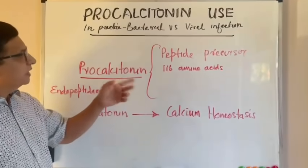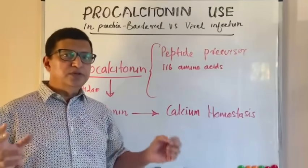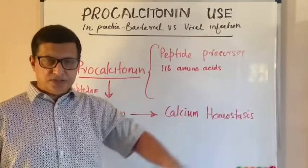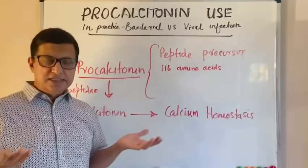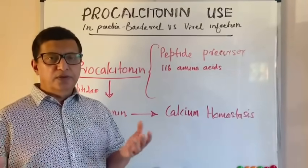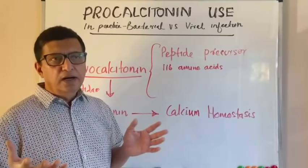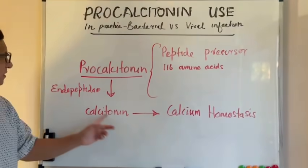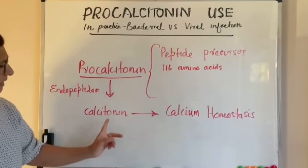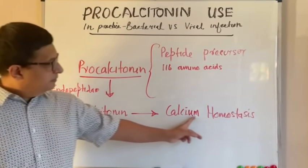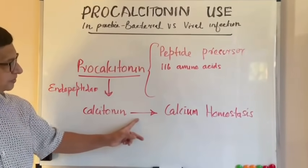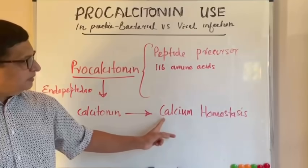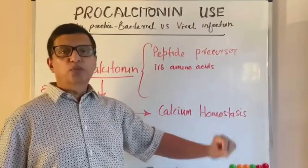Let's recap about procalcitonin before we go into the details. Procalcitonin is a peptide precursor with 116 amino acids, which is produced mostly in the C cells of the thyroid gland and other neuroendocrine tissues all over the body under normal circumstances. It is converted into calcitonin in the presence of endopeptidase, and calcitonin comes into the bloodstream and regulates the calcium concentration in the body — in other words, it regulates calcium homeostasis.